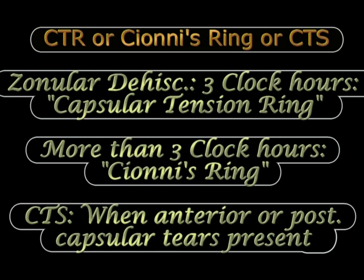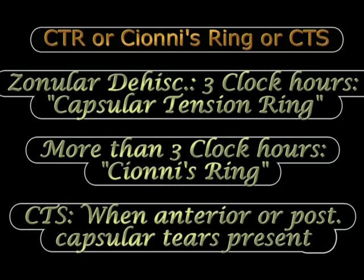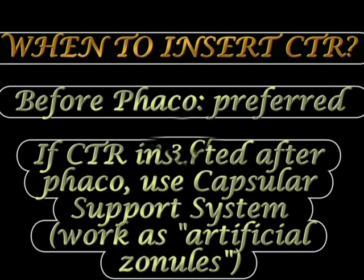We also have capsular tension segments — not complete rings, but small segments that can be placed directly in the area of the dehiscence. When zonular dehiscence is less than three clock hours, a standard CTR is adequate. When dehiscence is more than three clock hours, a Cionni ring should be used for additional stabilization. In the presence of anterior and posterior capsular tears, CTR is not recommended and only capsular tension segments can be implanted. The timing for CTR insertion is somewhat controversial.